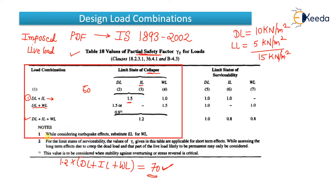There is a note: while considering the earthquake effect, substitute EL for WL. It means if you are considering earthquake load, just replace the wind load (WL) with earthquake load (EL) — that is the only change. The first set of combinations is for limit state of collapse; the second is for limit state of serviceability, both of which were explained in previous videos.